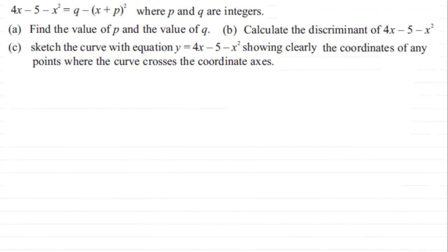What we've got here is an example on working with completing the square, and we've also got a bit on the discriminant and sketching a graph. We've got 4x minus 5 minus x squared equals q minus all of (x plus p) all squared, where p and q are integers. In part a, find the values of p and q. In part b, calculate the discriminant of 4x minus 5 minus x squared. In part c, sketch the curve y equals 4x minus 5 minus x squared, showing clearly the coordinates of any points where the curve crosses the coordinate axes.